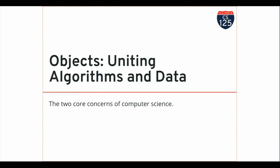Objects are kind of in the middle of this class — we talk about objects for the second of the three parts. The third part, we're going to talk about data structures and algorithms. Objects unite these two things together: they store data, and they implement algorithms. These are kind of the two core concerns of computer science.